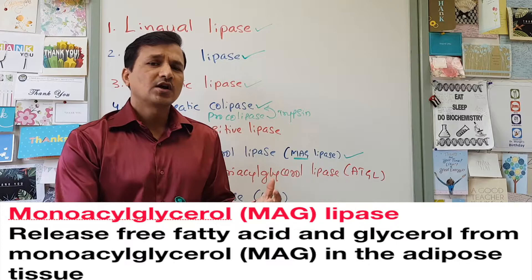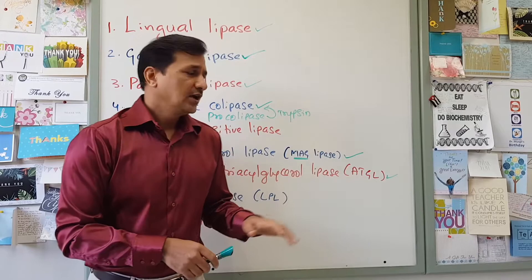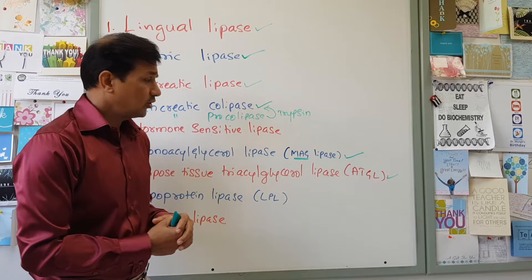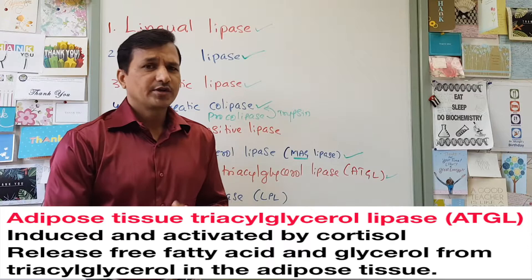Our next lipase is adipose tissue triacylglycerol lipase. This enzyme is induced and activated by cortisol. It breaks down triacylglycerol present in the adipose tissue into free fatty acids and a glycerol molecule.